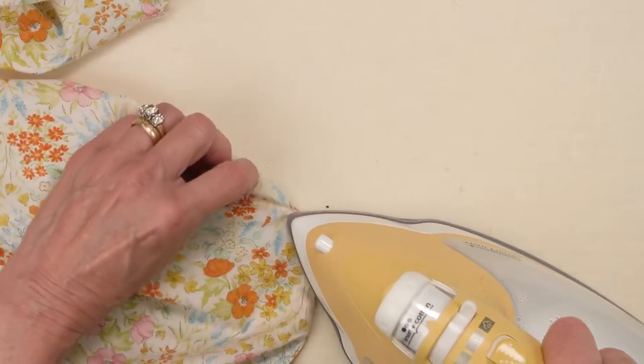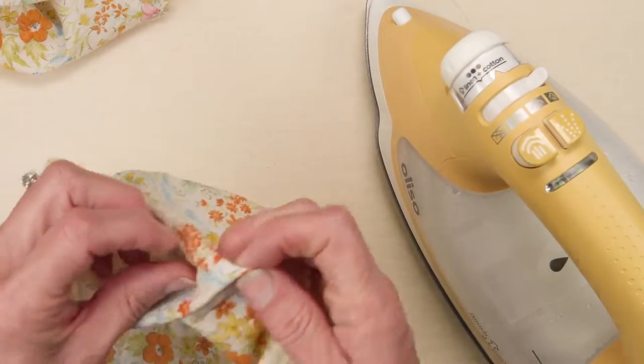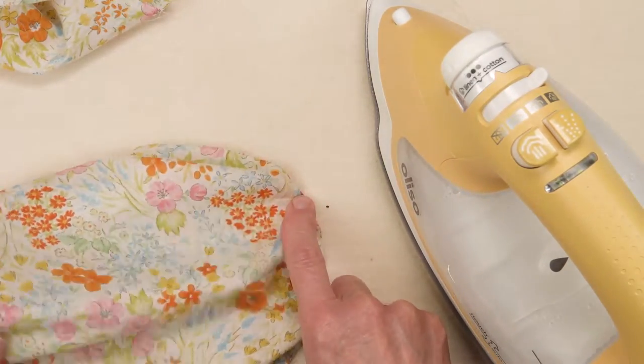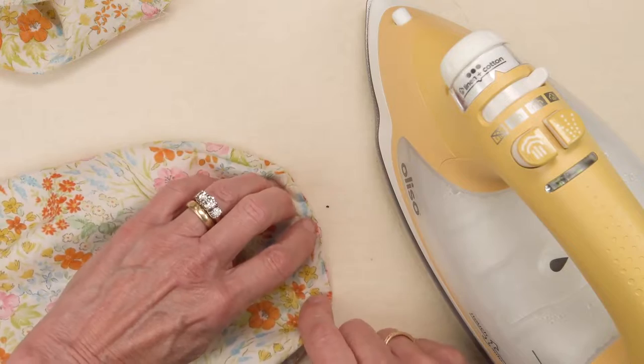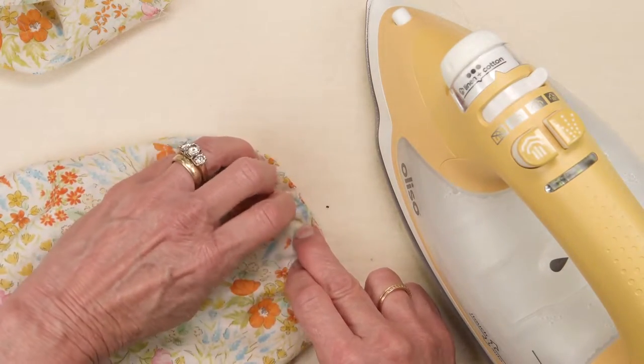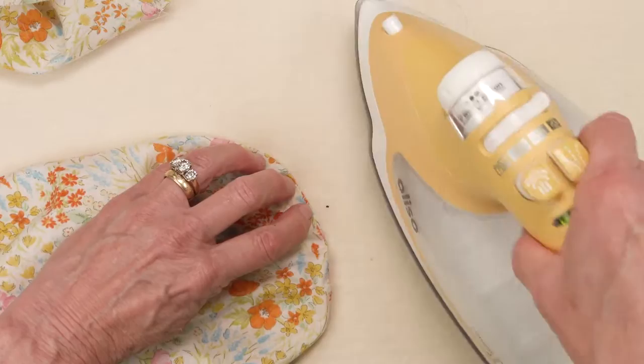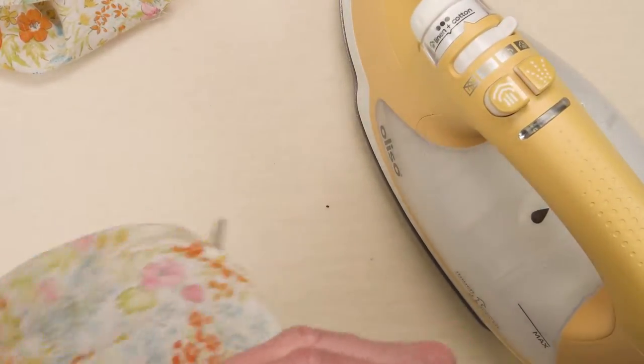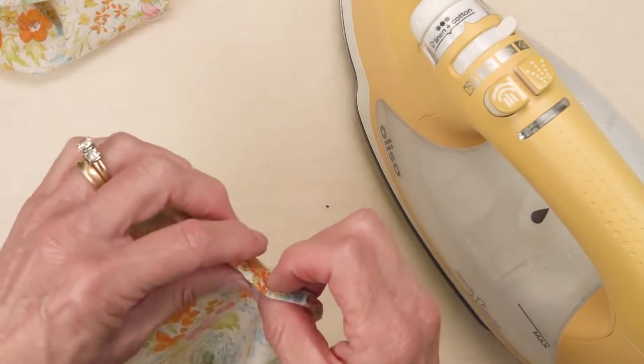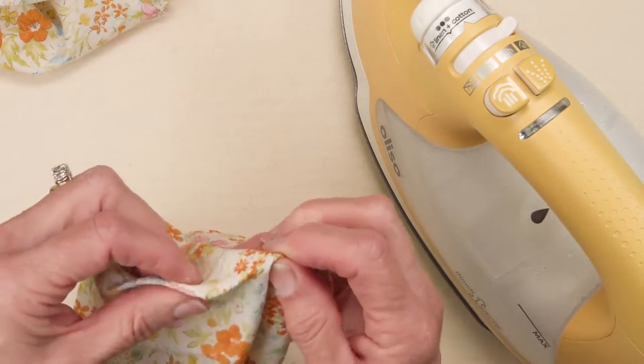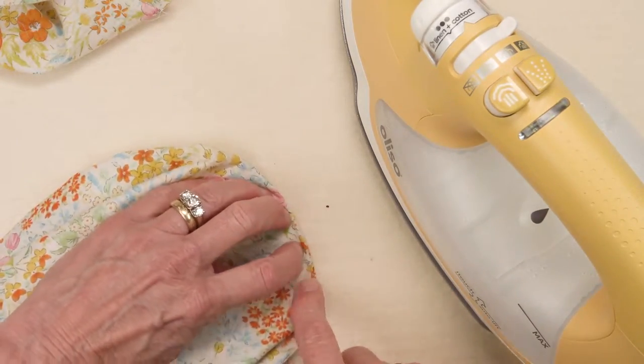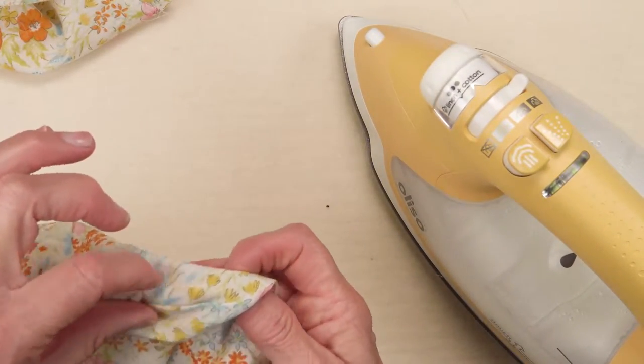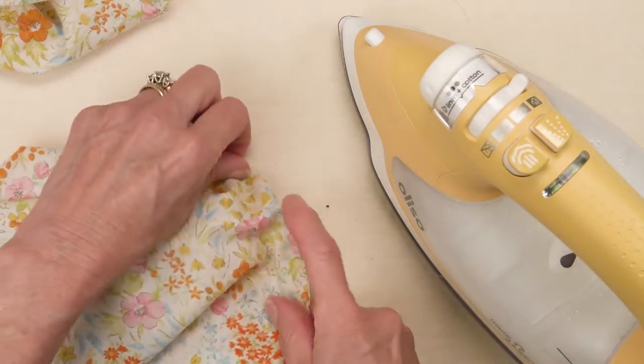You could do a bigger top stitch than I did. You could add some sort of trim out here. There's all kinds of options. You could do some fusible interfacing on the bottom of one or the other of these pieces. And if you were going to do that, do it before you sew the bag together. So you would apply the interfacing to the bottom fabric and then trace the circle on that fabric and cut it out.